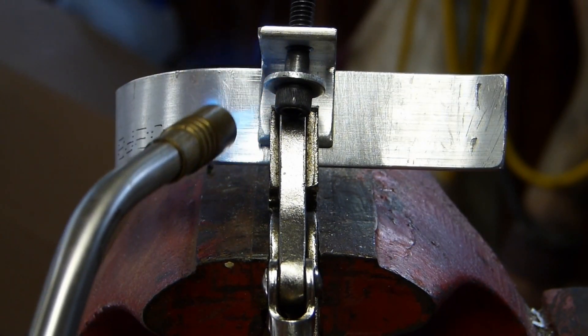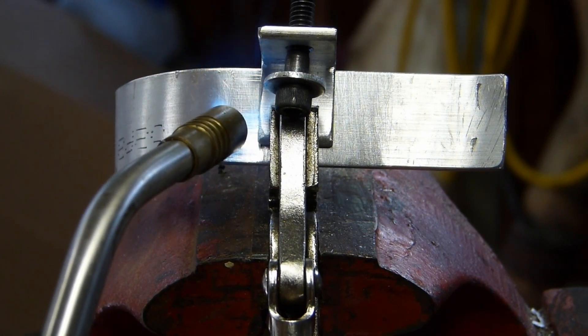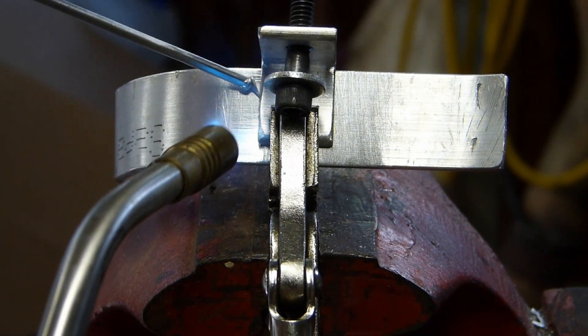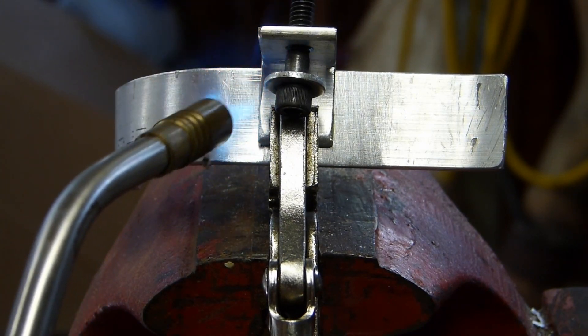So you can see the rod tip going in there and you just keep heating it and touching it until it starts melting on the surface.